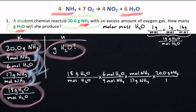Now we're going to cancel out. Mole H2O over mole H2O cancels. Mole NH3 and mole NH3 cancels. Gram NH3 and gram NH3 cancels.